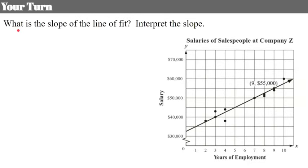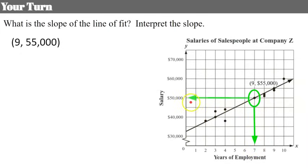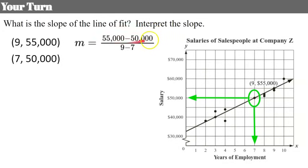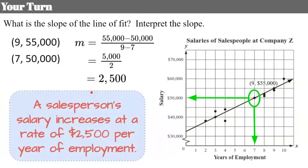Now pause the video and determine what the slope of the line of fit is and interpret it. Welcome back. I identify the given point and use a second point of (7, 50,000). So (55,000 − 50,000) over (9 − 7) gives 5,000 over 2, which is a slope of 2,500. Interpreting this: a salesperson's salary increases at a rate of $2,500 per year of employment — as the year goes up, their salary increases by $2,500.